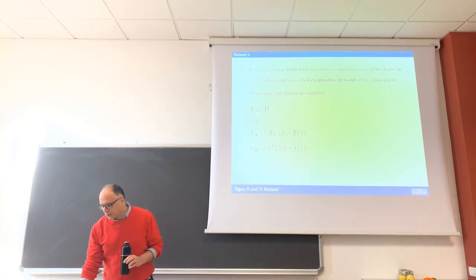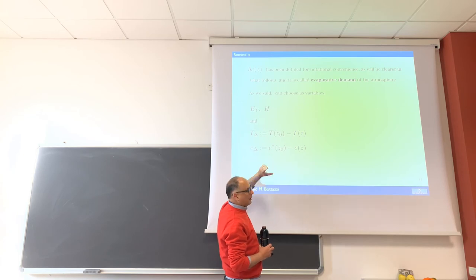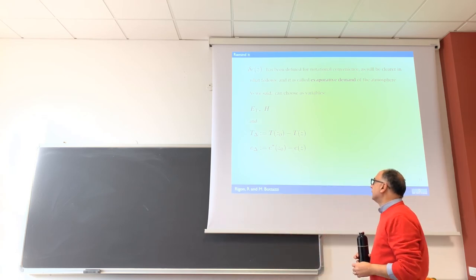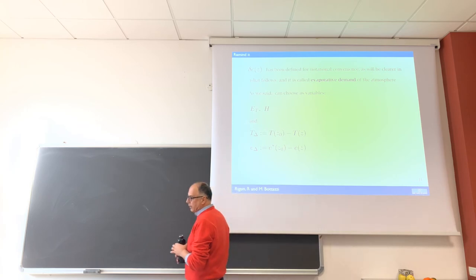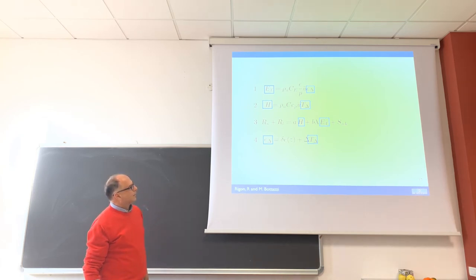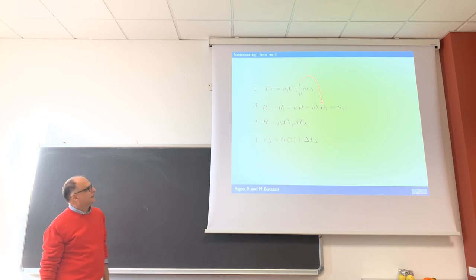I have to subtract minus A zeta from the second term. In the second term I have A star minus A, and this I call evaporation demand. Another couple of definitions for simplification: T delta is the difference between temperature at the two heights, and A delta is the difference between the surface and A at z. So the final form of our equation is this one, and now I am ready to solve.